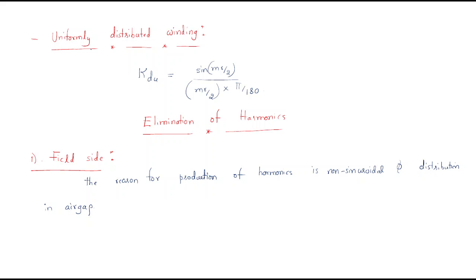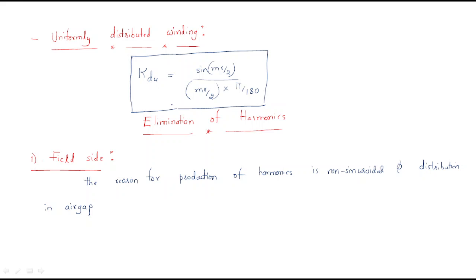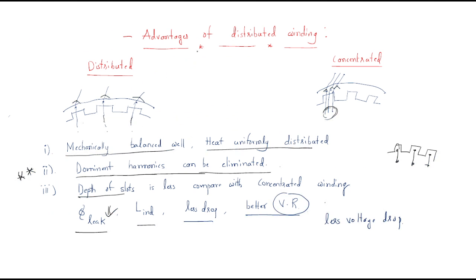Now we should understand the term of uniformly distributed winding. The winding is distributed very uniformly for all the slots. We can represent this as kdu. The formula for uniformly distributed winding is: kdu = sin(mγ/2) / (m · sin(γ/2)), where γ = 5π/180. This is the important formula for the uniformly distributed winding.